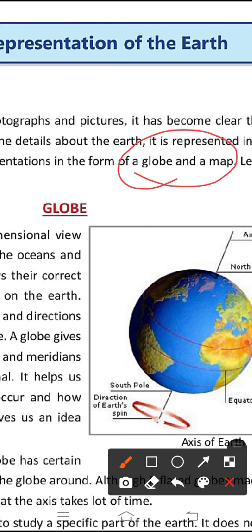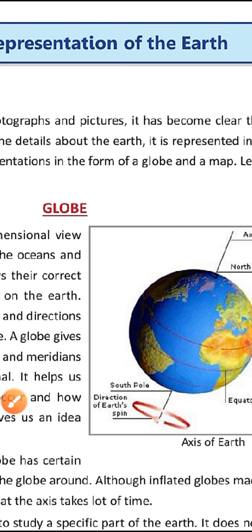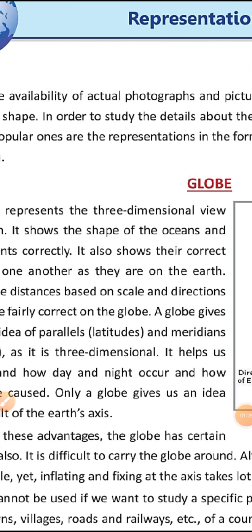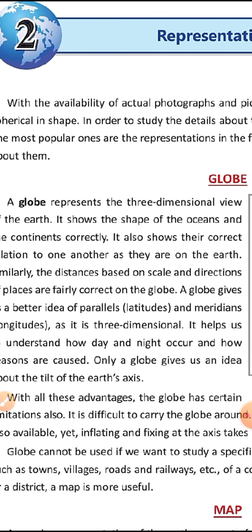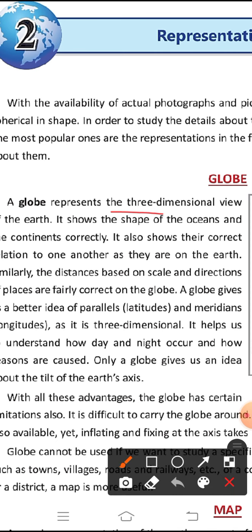First of all, you must know about the globe and map. What's the difference between globe and map? A globe represents a three-dimensional view. Three-dimensional view means you can see it from three different ways. Whereas a map is a page, it has one side and a second side.